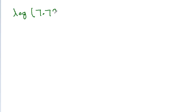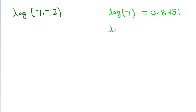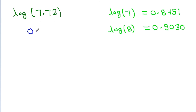If we have to find the value of log 7.72, we know log 7 is 0.8451 and log 8 is 0.9030. Since 7.72 is close to 8, the value will be approximately 0.88 or 0.89.